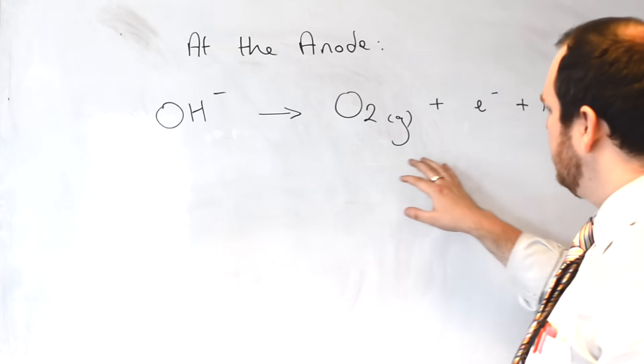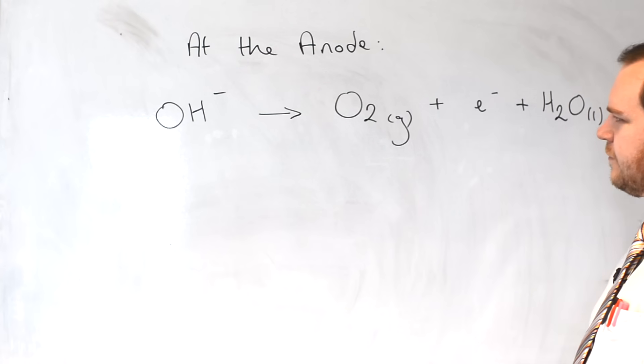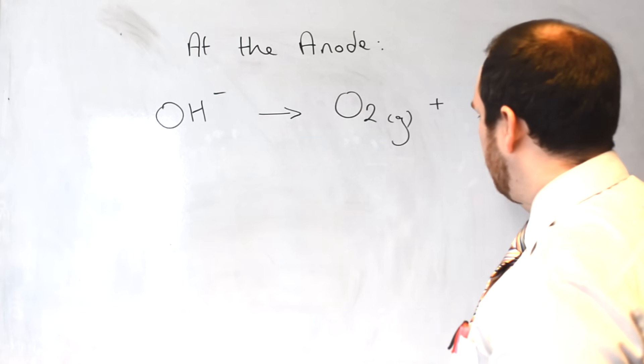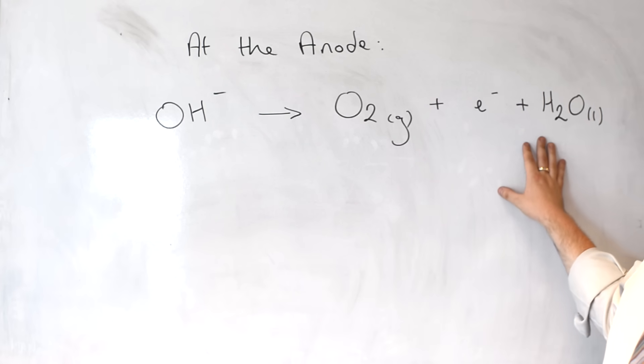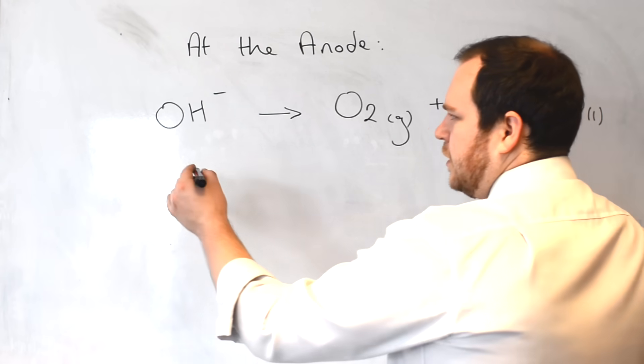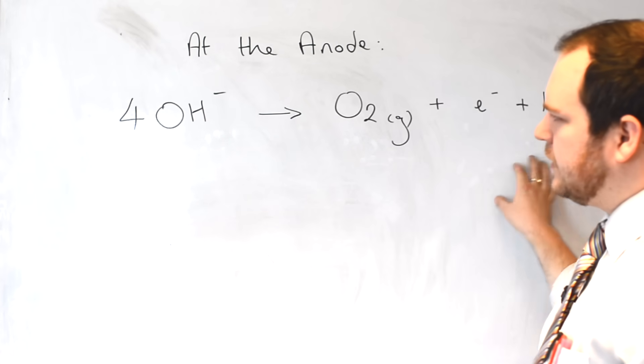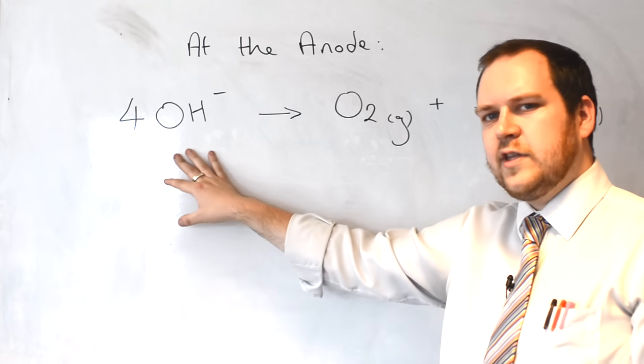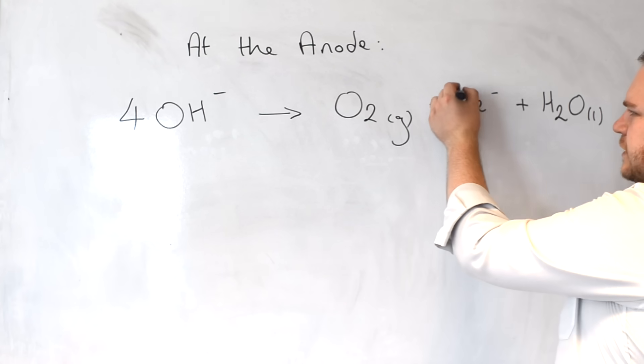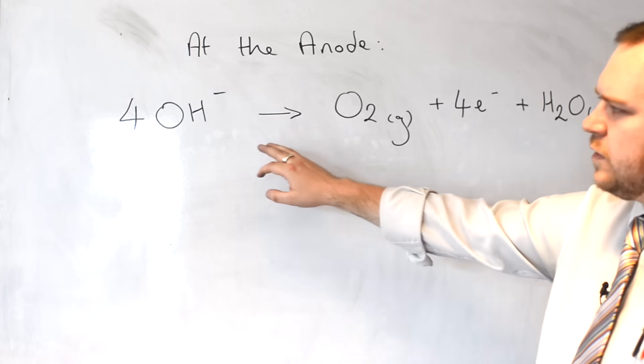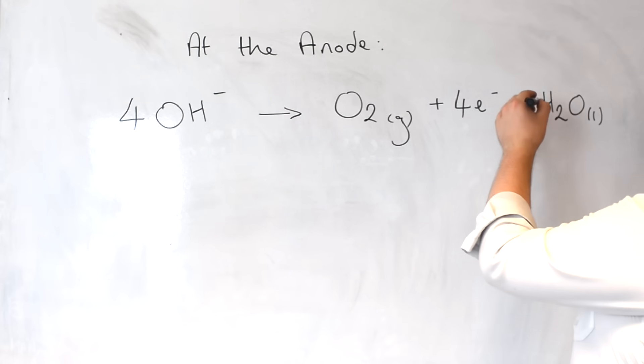We need to balance this. At present, we don't have enough oxygens from the hydroxide ions or hydrogens to fulfill the equation we have. So we have four hydroxide ions forming our oxygen and our water. Now because we've got four negative charges on this side, we need to have four negative charges on this side. We now can balance the hydrogens, so we should have four hydrogens from the hydroxide ion going to form two lots of two hydrogen form the water.